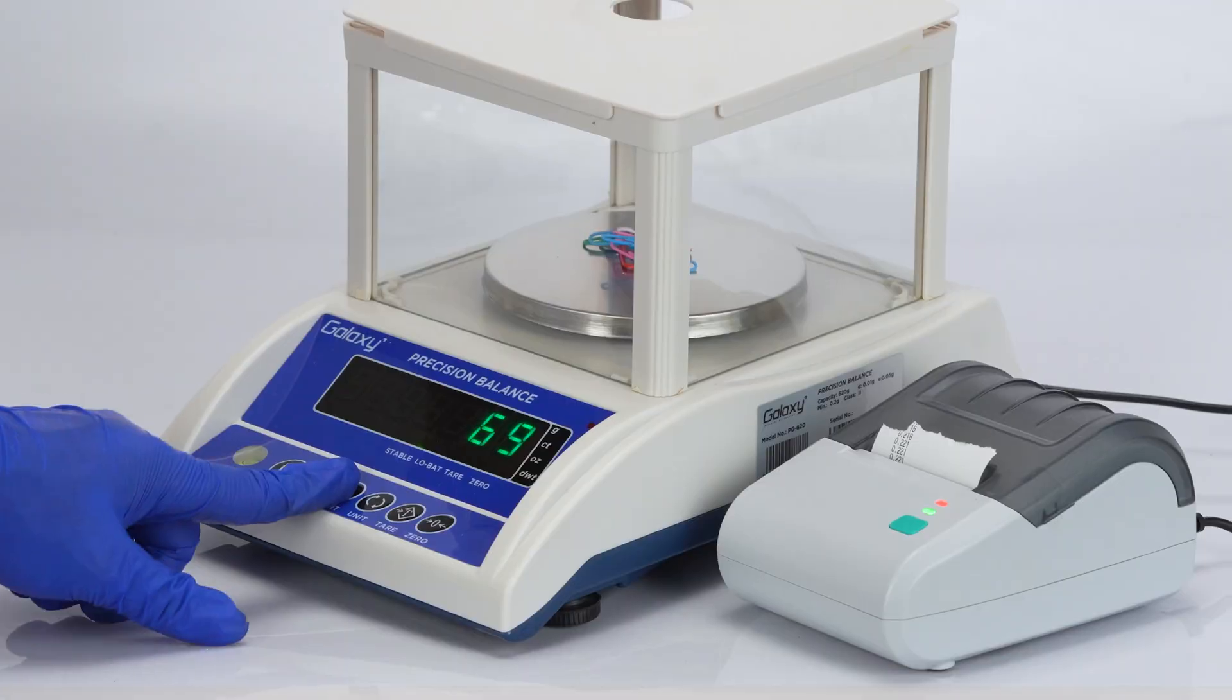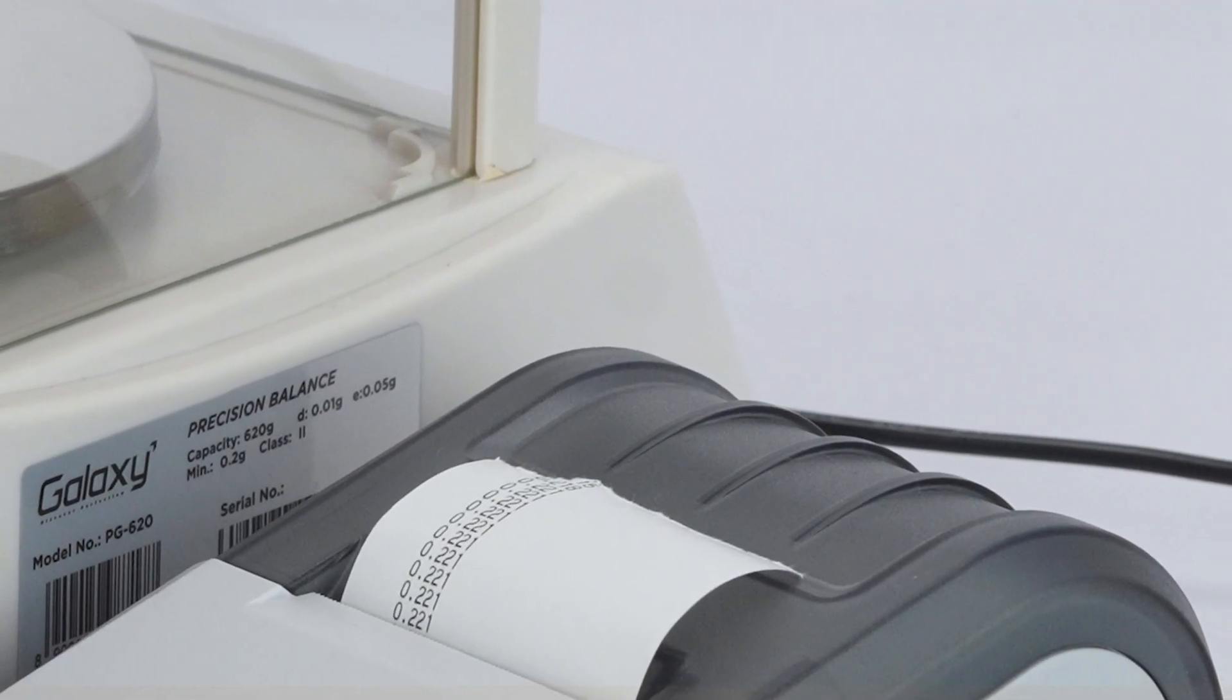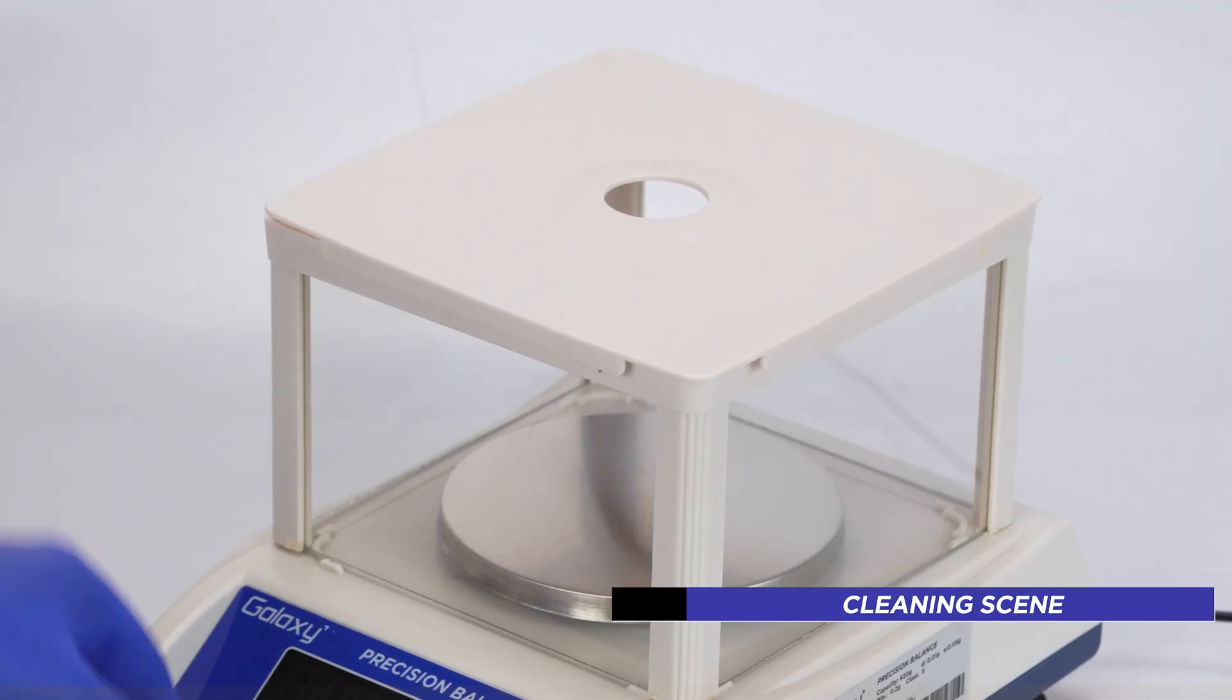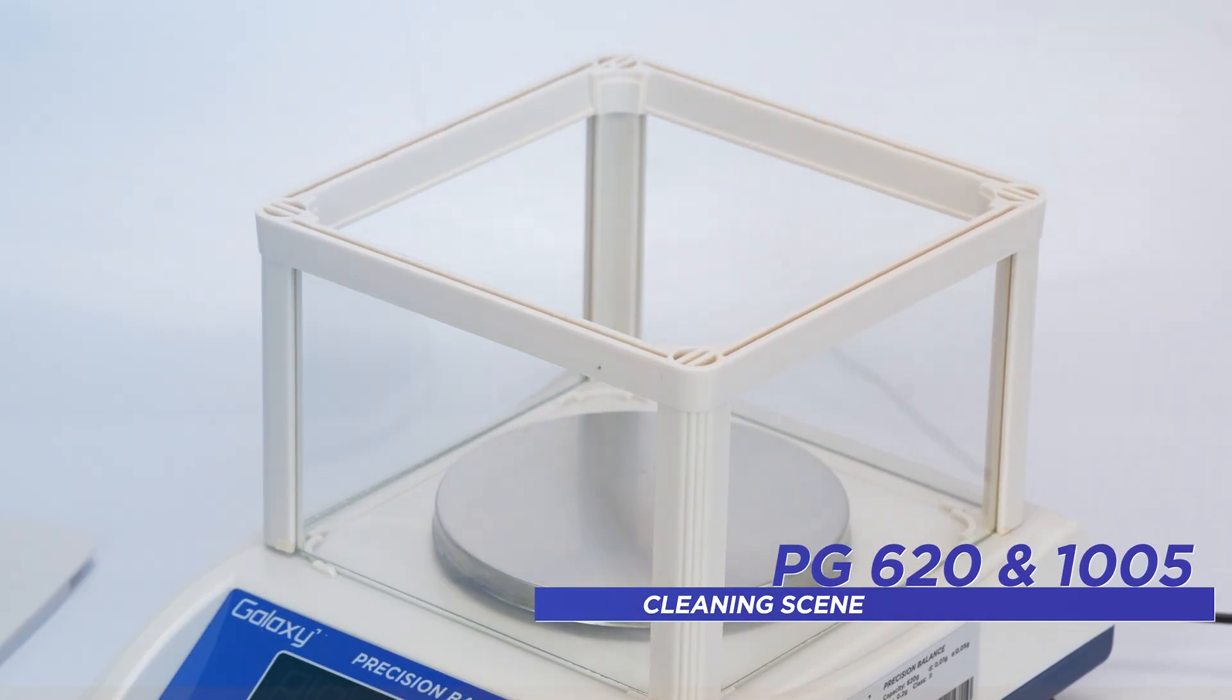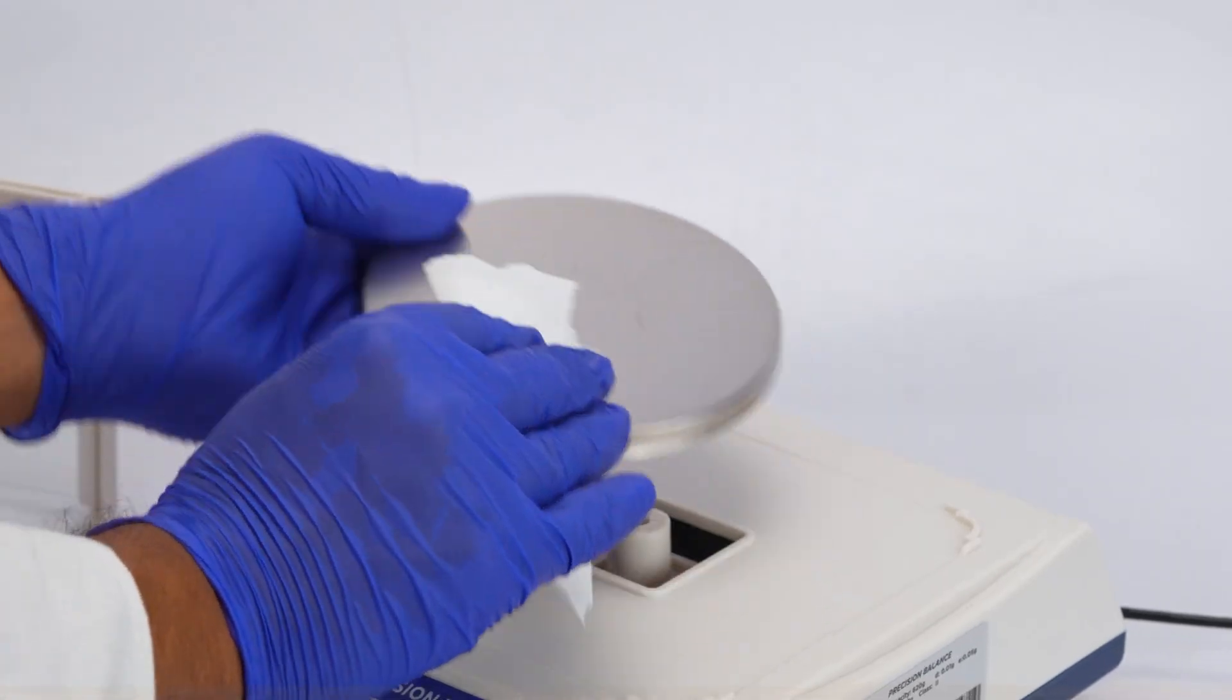To print the data, press the print key to send weighing results to connected printer. After weighing, clean the pan and surrounding area to maintain the balance's accuracy and ensure its longevity.